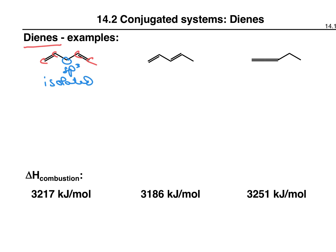In the next example, all four carbons are sp2 hybridized. This is called a conjugated diene. It's written as double bond alternating with single bond alternating with double bond, but the more important thing is that we have sp2 hybridized carbons all in a row — that makes it a conjugated diene.